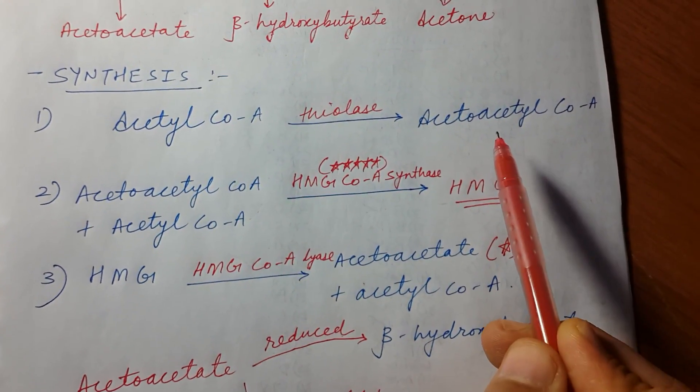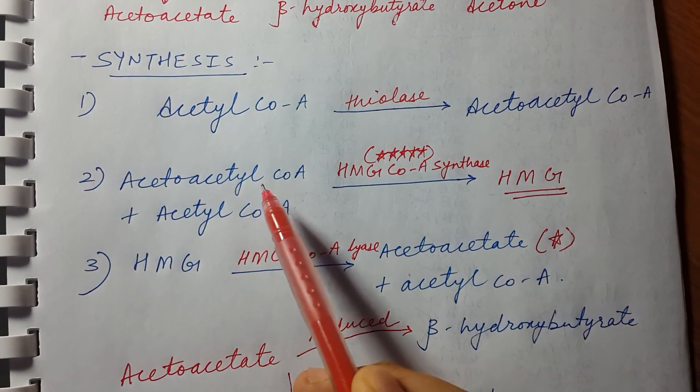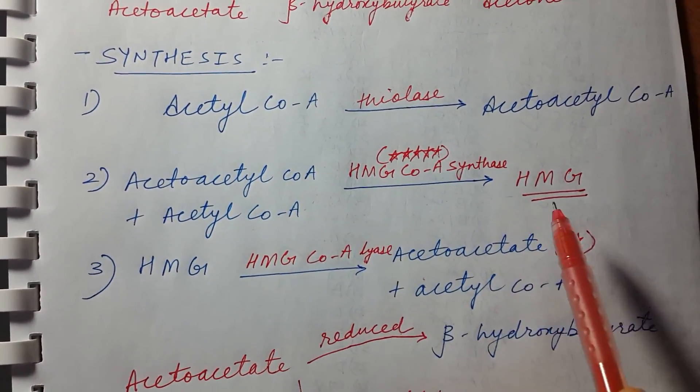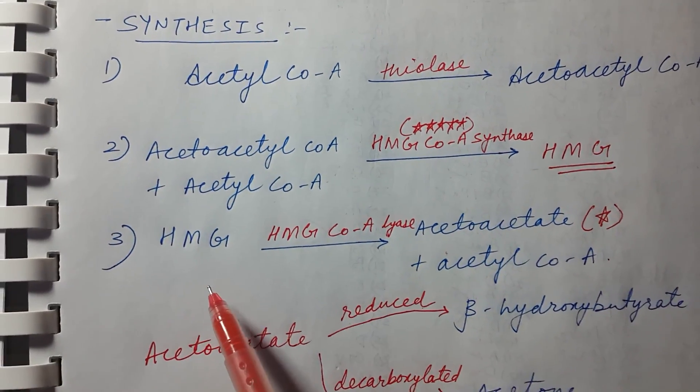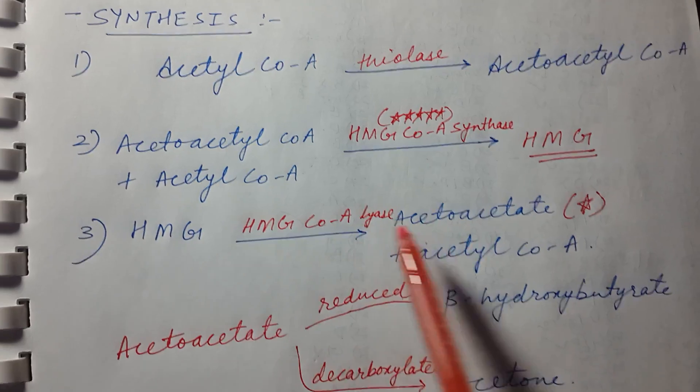So see, first we made acetoacetyl coenzyme A, then we take that acetoacetyl coenzyme A and we added acetyl coenzyme A which formed HMG. Now that HMG will be broken down into acetoacetate and acetyl coenzyme A.